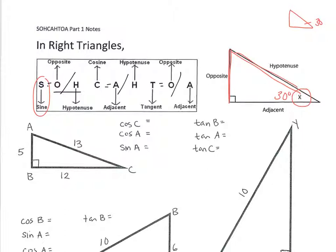Let's talk about what opposite, adjacent, and hypotenuse are. If this is my angle X, the side that's in common with the vertex is adjacent. You specify the hypotenuse right away because the hypotenuse is opposite the 90-degree angle. The side adjacent is touching the angle, and the side opposite is directly across from the angle.